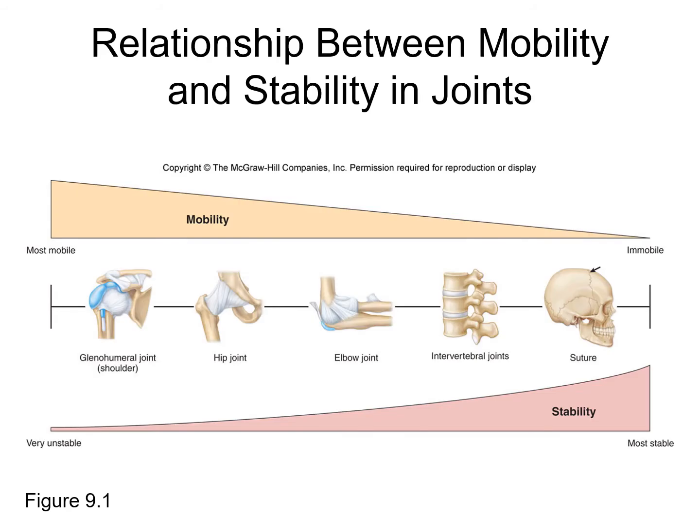Today we are going to talk about our joints. When two bones connect with each other, you will have a joint in that region. The term we use for bones connecting with each other is articulation, so when bones articulate, that means they are joining together and you will have a joint in that region.